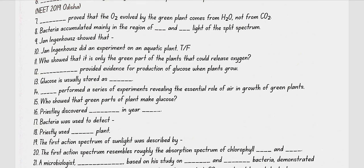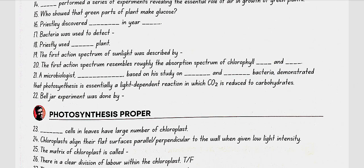Jan Ingenhousz provided evidence for production of glucose when plants grow. Julius von Sachs showed that glucose is usually stored as starch. Joseph Priestley performed a series of experiments revealing the essential role of air in the growth of green plants, and Priestley discovered oxygen. He used a mint plant.